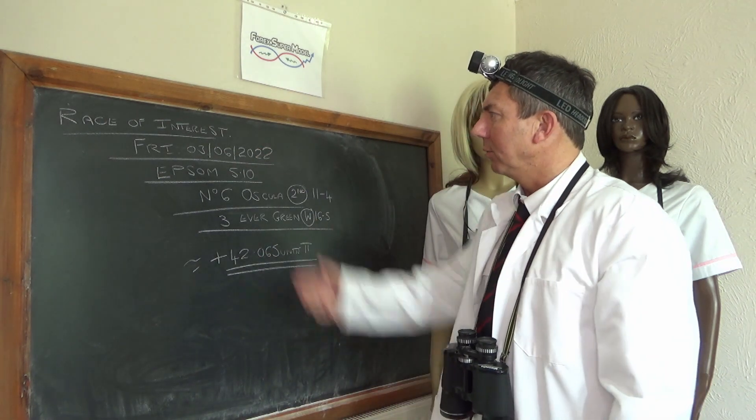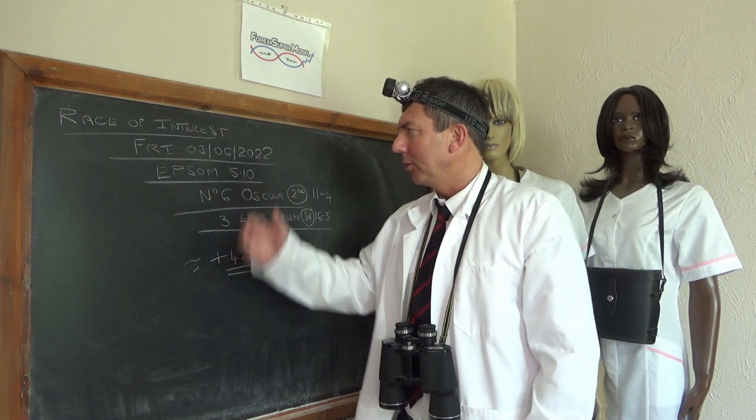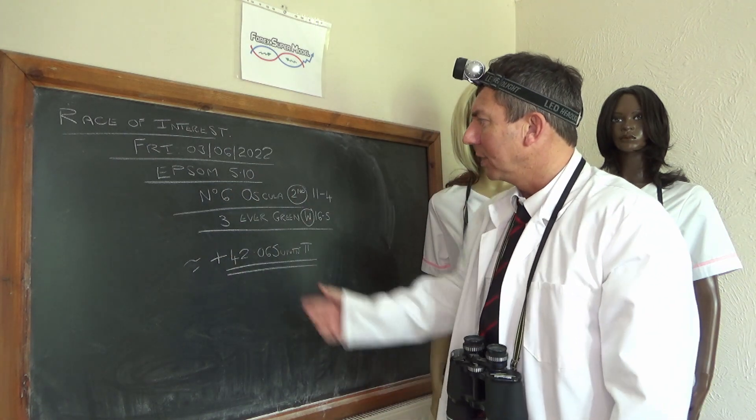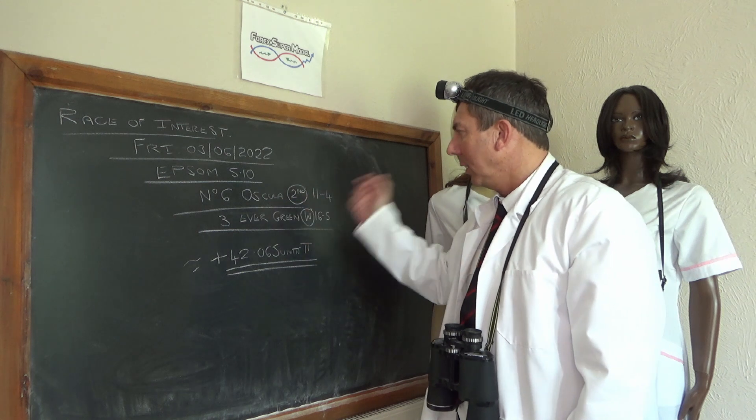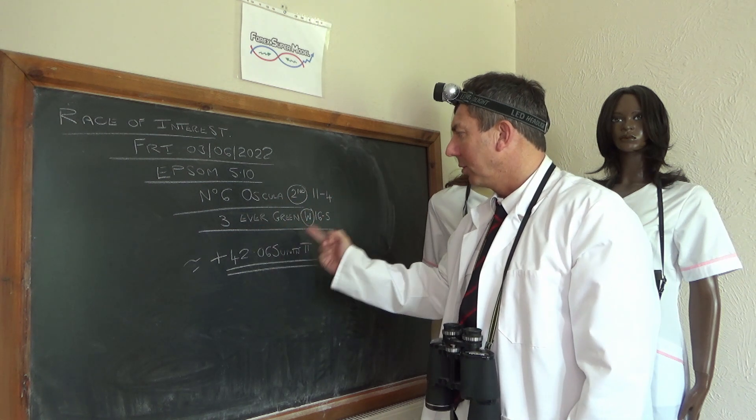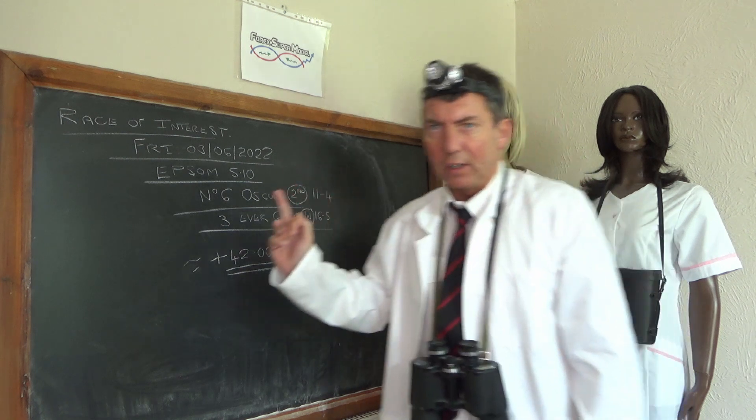There was a race of interest yesterday which was Friday the 3rd, we didn't actually pay on it but it was of interest, the Epsom 510. We were interested in this number 6, Oscula, that came second at 11-4 and the eventual winner was number 3, Evergreen, which won at 16-5.